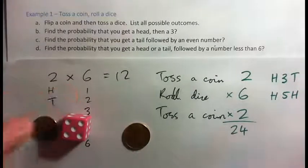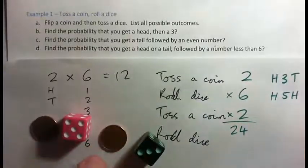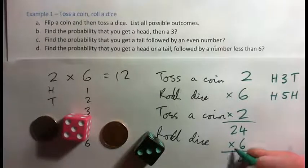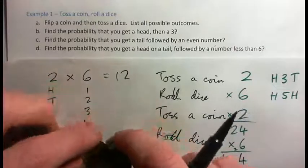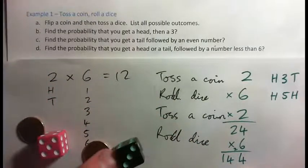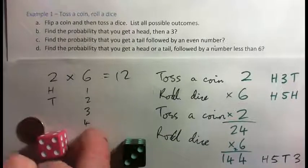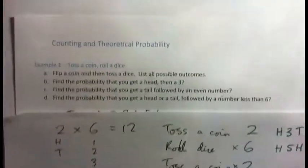If we add another event — say, rolling a dice again — that introduces 6 more outcomes. So 24 × 6 = 144 possible outcomes. For toss a coin, roll a dice, toss a coin, and then roll another dice, you would have 144 possible outcomes. One possibility out of 144 might be: head, 5, tail, 3.